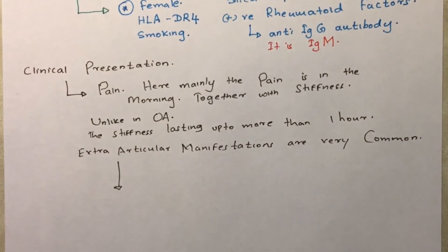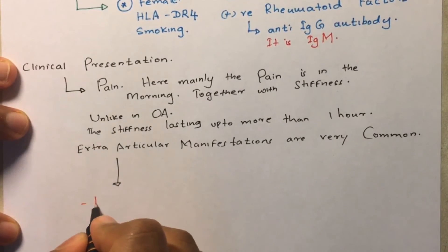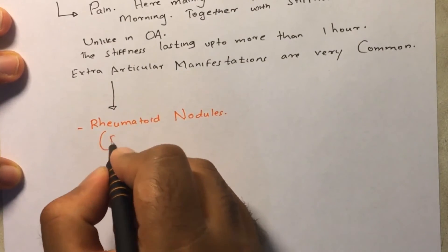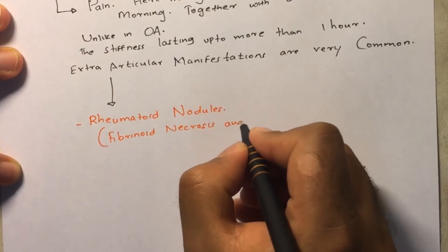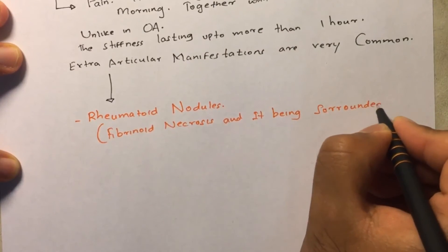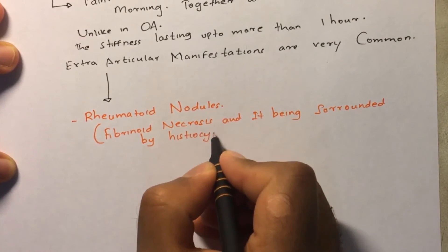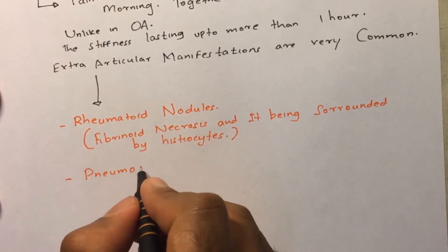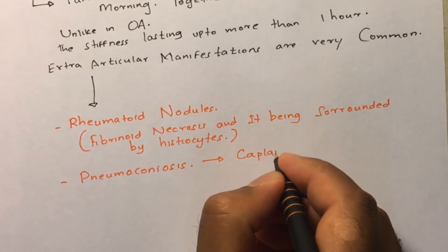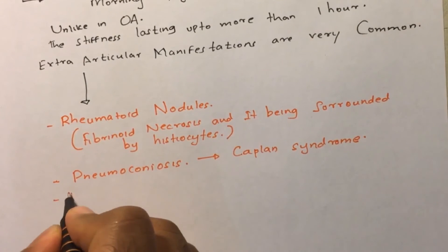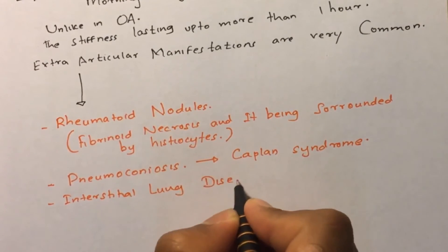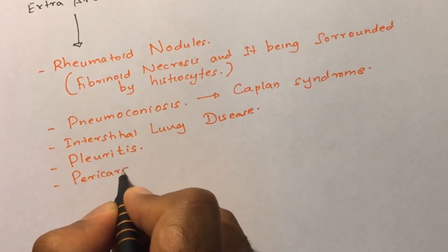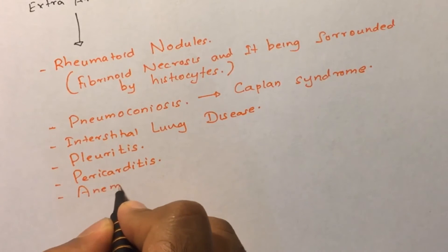In comparison, in osteoarthritis the pain worsens at the end of the day. A key differential between osteoarthritis and rheumatoid arthritis is the presence of extra-articular manifestations in RA. Rheumatoid nodules appear at areas of skin stress like the olecranon, resulting from a vasculitis reaction causing fibrinoid necrosis. There can also be lung involvement with dust particles causing pneumoconiosis — called Caplan syndrome — other interstitial lung diseases, serositis like pleuritis and pericarditis, and anemia of chronic disease.